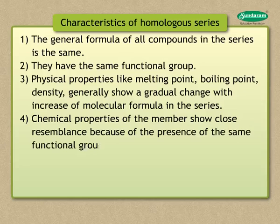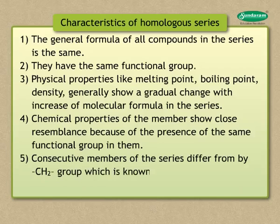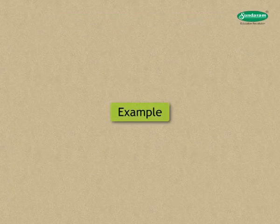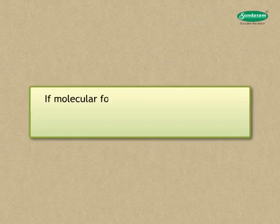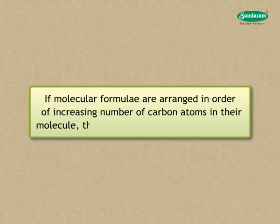Four, the chemical properties of the members show close resemblance due to the same functional group in them. Five, consecutive members of the series differ by a -CH₂- group, known as the methylene group, and their molecular weight differs by 14 units. For example, if the molecular formulae are arranged in order of increasing number of carbon atoms, the series is obtained as shown.